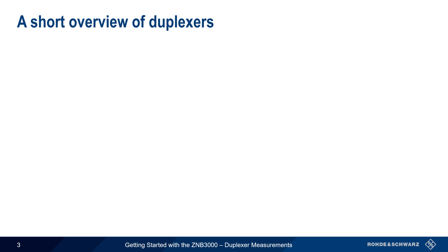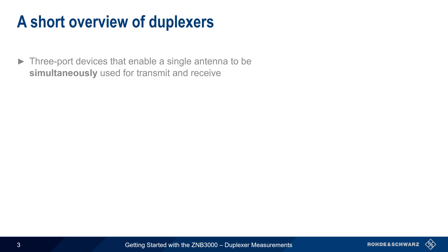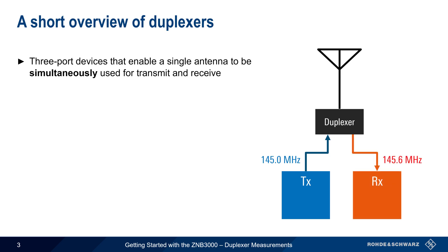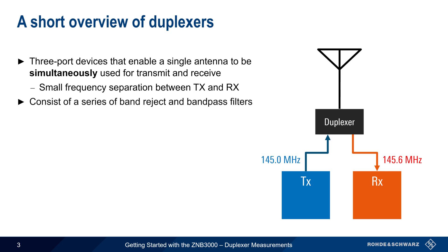Let's start with an overview of duplexers. Duplexers are three-port RF devices that enable a single antenna to be used simultaneously for transmitting and receiving. They are used when the frequency separation between transmit and receive is small, typically on the order of hundreds of kilohertz to low tens of megahertz. Duplexers are constructed using a series of filters — almost always one or more band reject or notch filters, and often band pass filters as well.